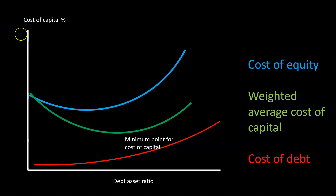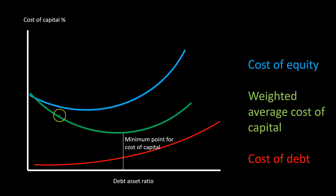Here on our graph, we have the cost of capital percent on the vertical axis and the debt-to-asset ratio on the horizontal axis. The lines include the cost of equity, the weighted average cost of capital, and the cost of debt. We're focusing on the weighted average cost of capital. We can see this is a U-shaped line, and where we want to be is at the bottom point of this line, minimizing the cost of capital percent.